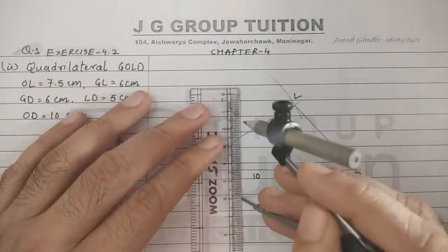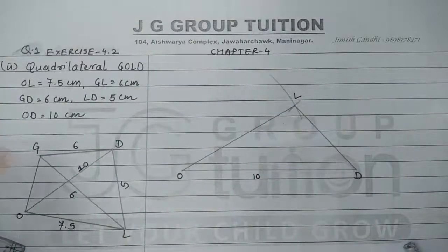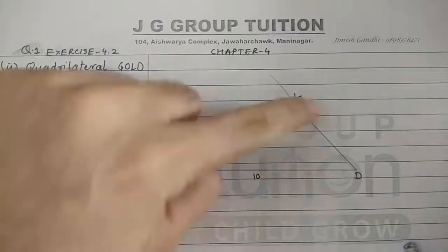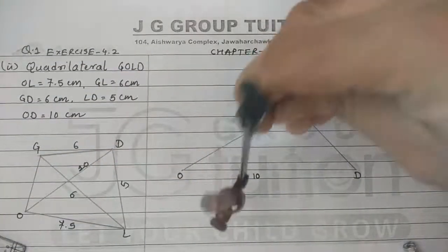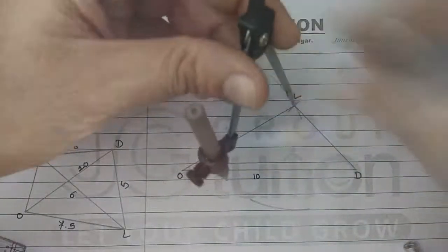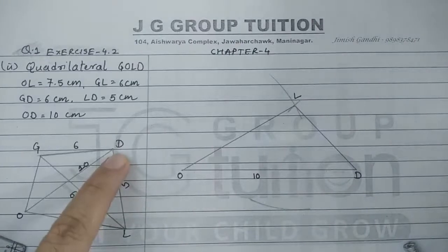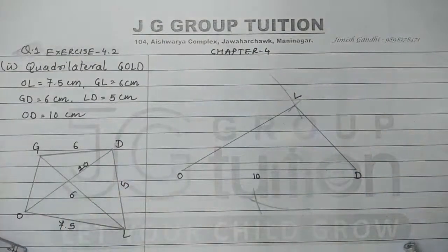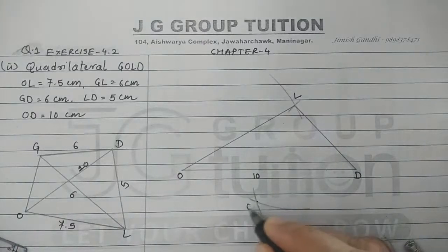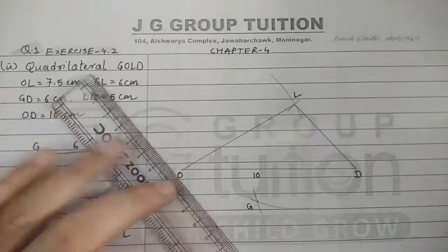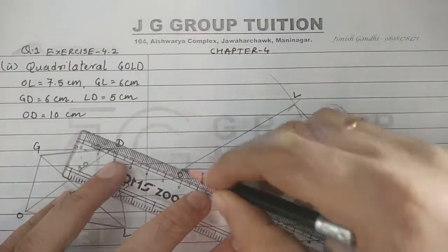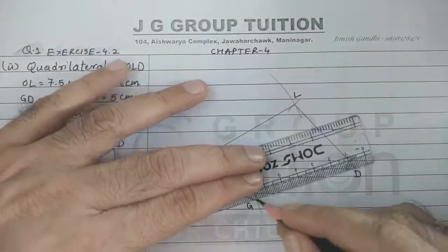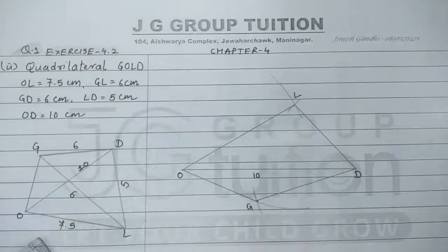As we discussed, to obtain G one arc should be drawn from L. L and G are on the opposite side, so L to G must be somewhere on the opposite side. Let us draw an arc from point L, this is of 6 centimeters. Another arc from point D that is again of 6 centimeters. We can see they are intersecting — that point is G. Let us join OG and OD.